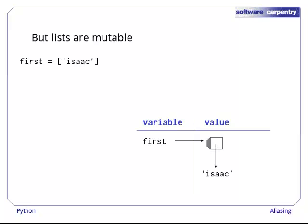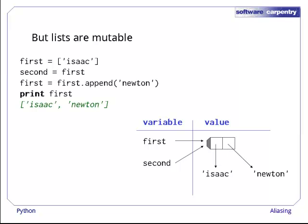Let's assign a list containing the string Isaac to the variable first, and then assign first to second. The two variables are now referring to the same thing in memory as before. If we now append another string to the list that first is pointing at, the change is also visible when we look at second's value, because it's the same value.